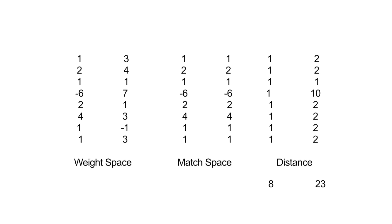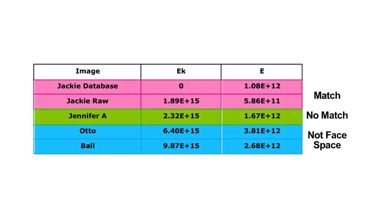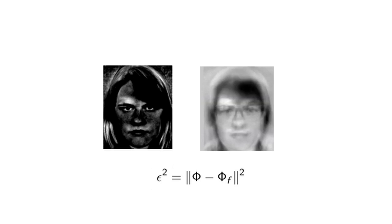At this point, most of the math is complete. All that is left is deciding if the face is a match by setting a threshold of distance. If the match is below the threshold distance, it is considered a match. There are two thresholds to consider: whether the image is a match, not a match, or not in face space at all. The threshold of face space is the Euclidean distance between your matching image minus the average face versus the reconstructed eigenfaces. If this distance is below a certain threshold, you consider the face to be in face space. For our purposes, we use the value of 2 times 10 to the 12th as the threshold. If the value was less than that, the face was considered in face space; if greater, it was not.